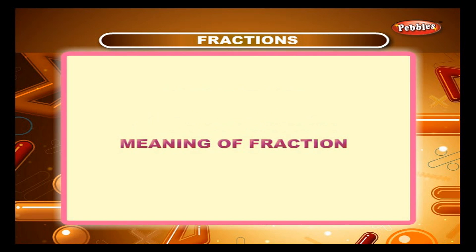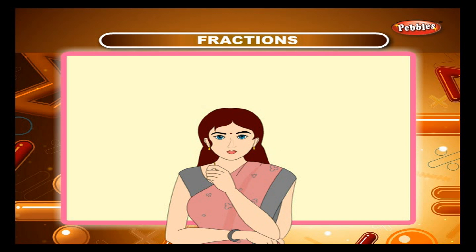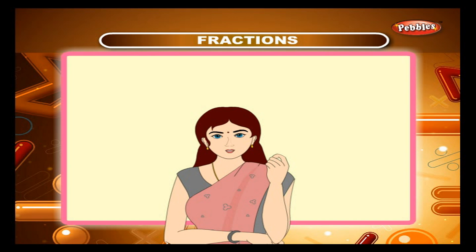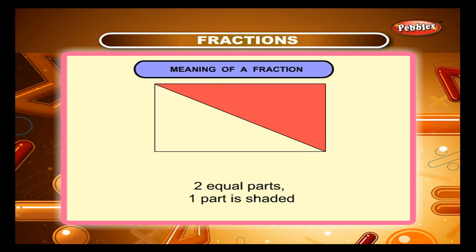Fractions: Meaning of fraction. One or more parts out of many equal parts is called a fraction. In the first figure, which is a rectangle, there are two equal parts. Here, one part is shaded — in other words, half of the region is shaded.